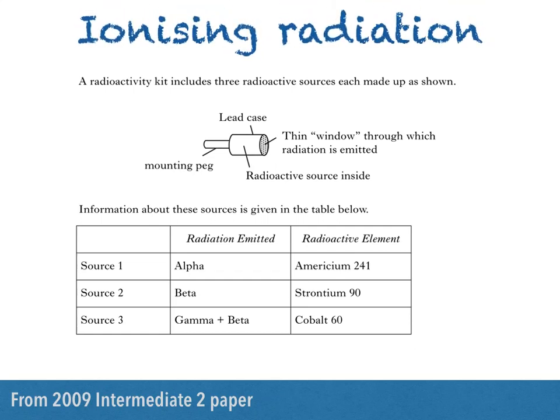Hi there. In this video, I'll be answering a question on ionizing radiation, describing how you can identify the type of radiation emitted by a source, as well as performing a half-life calculation and calculating the equivalent dose received by someone working with a radioactive source. This question is from the 2009 Intermediate II paper.